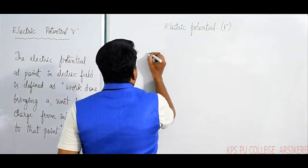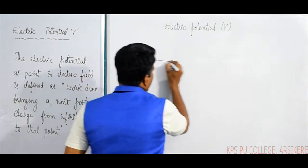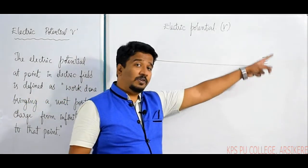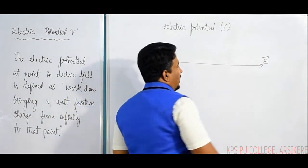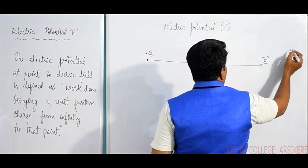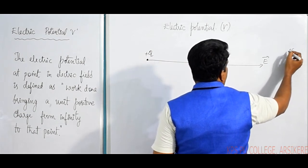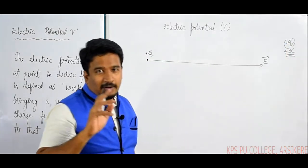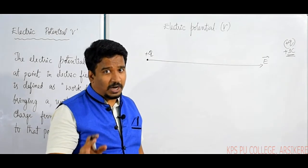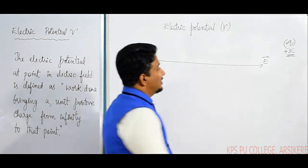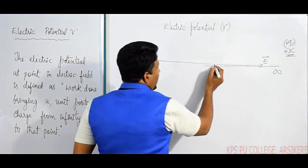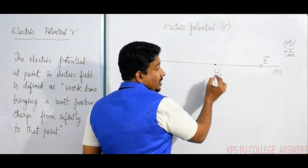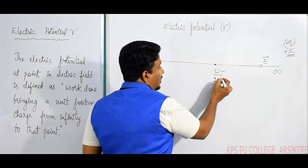Consider a positive charge which produces an electric field E in a certain direction. The electric field extends up to infinity. Now, we are going to bring a unit positive charge — that means one coulomb of positive charge — from infinity through the electric field. The work done per unit positive charge is what we focus on.